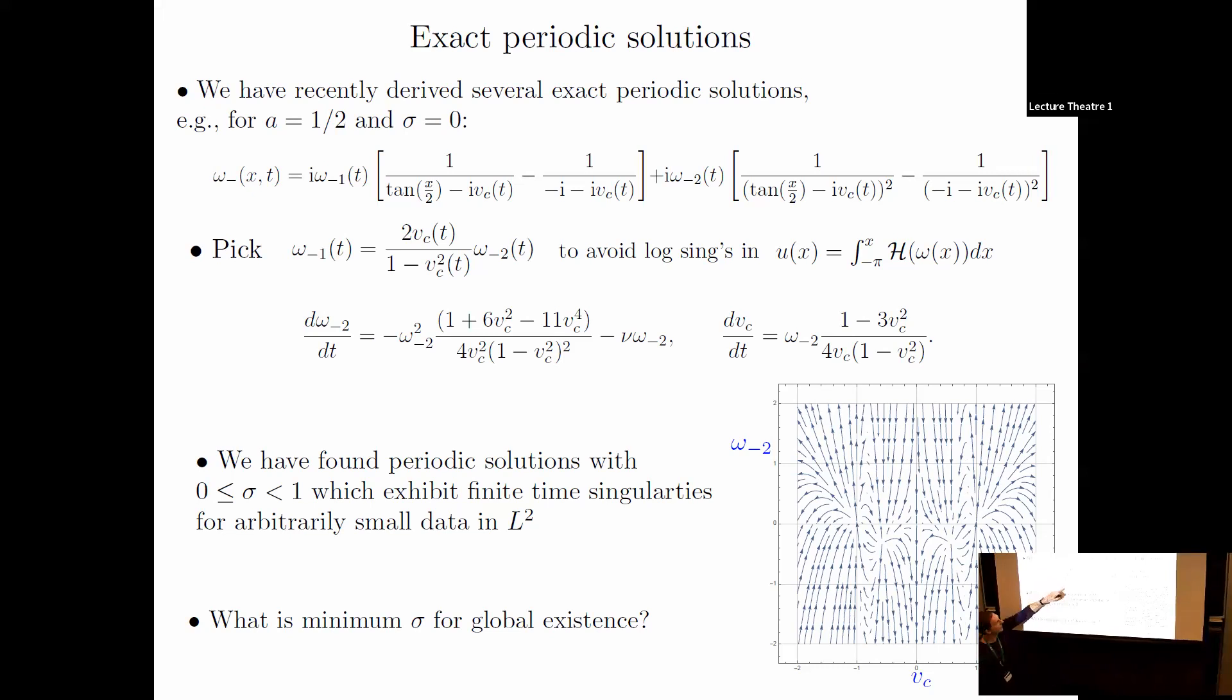When you do that, you get an exact solution, a closed system. Here are the ODEs, more complicated than the simple one I showed before. We can't integrate these exactly, so we do a phase plane analysis of blowup. You can get blowup here and here—this is symmetric. It will blow up in certain regions of the phase plane. Some of these solutions exhibit finite-time singularities for arbitrarily small data, but the sigma is outside the range of the theorems. So that brings up the question: what is the minimum sigma for global existence?